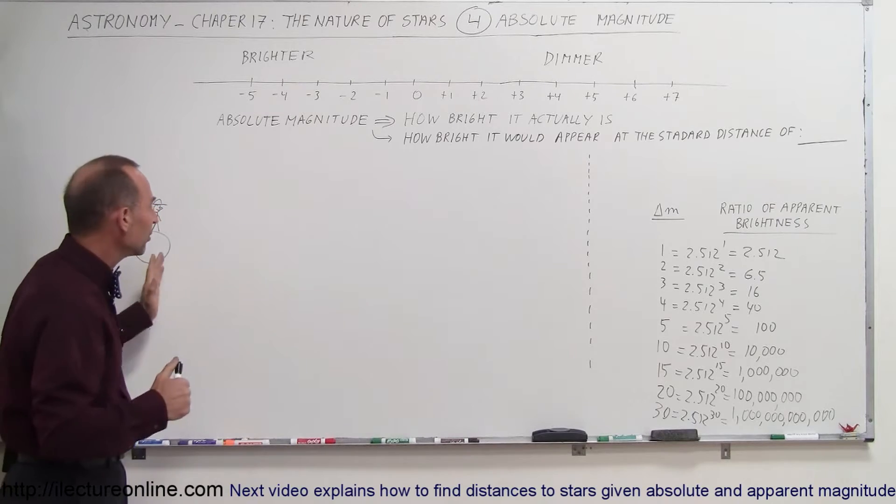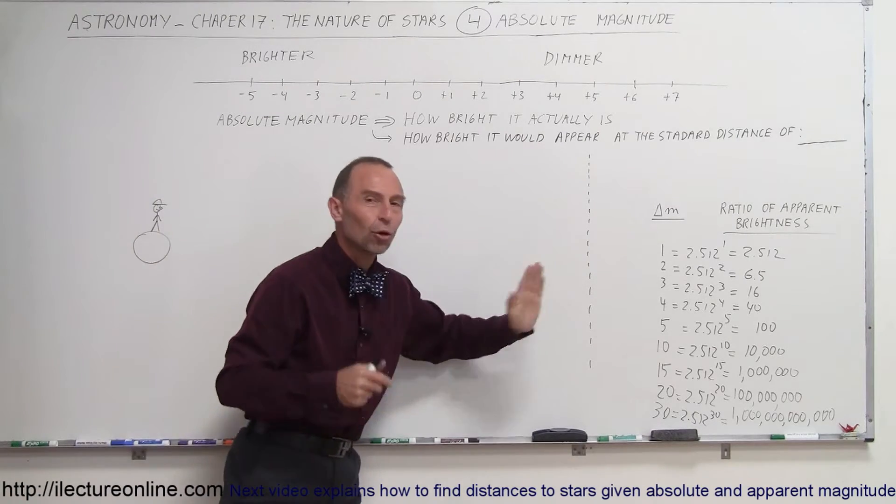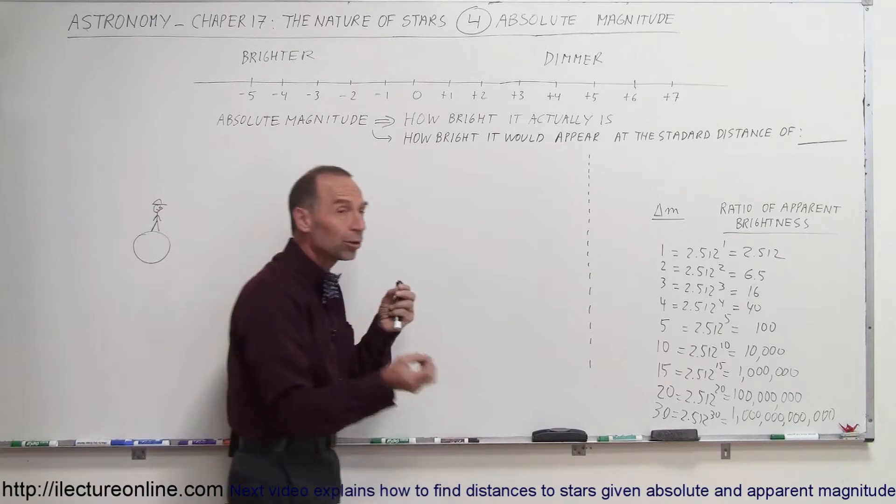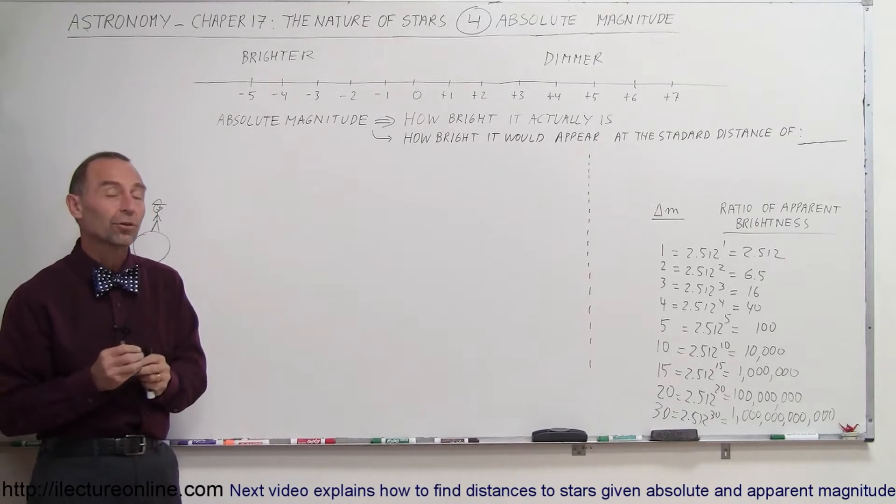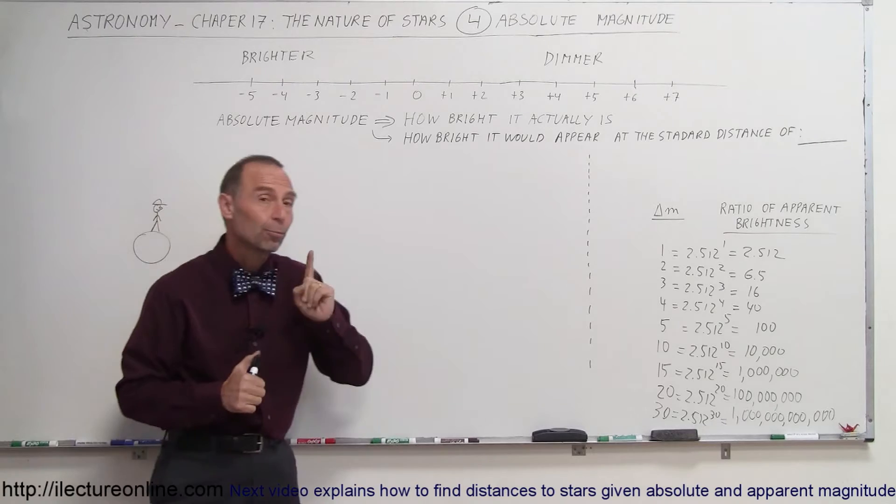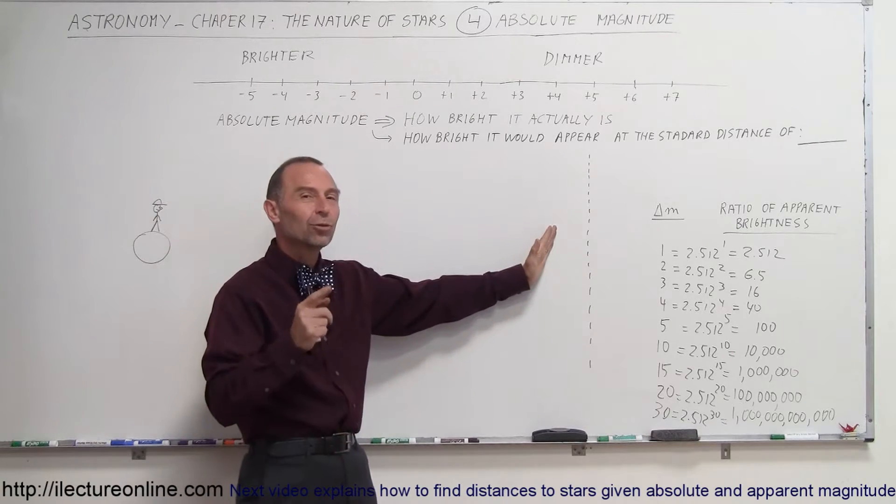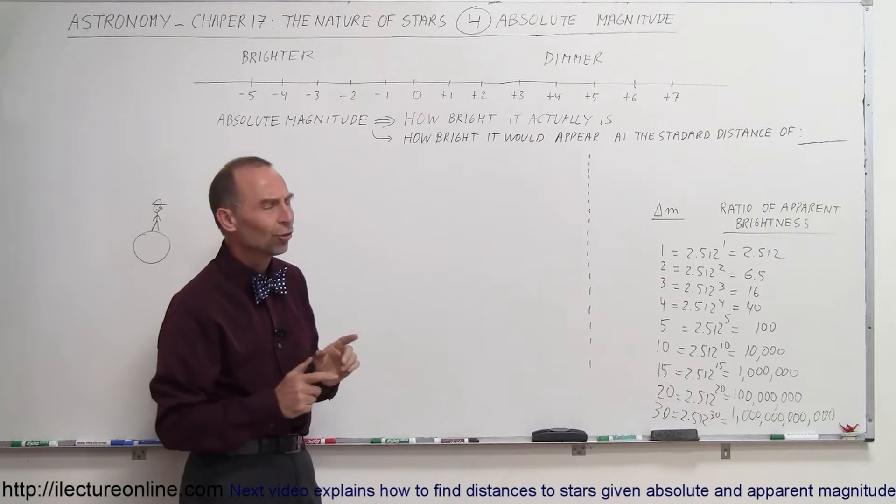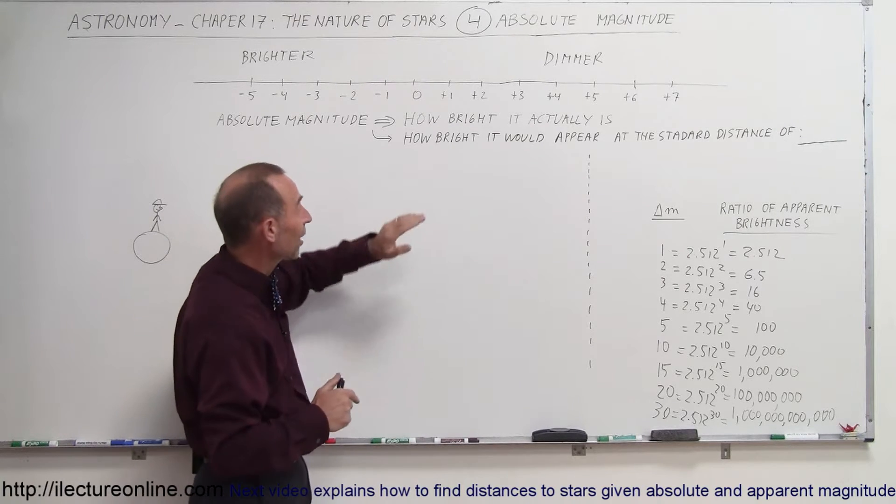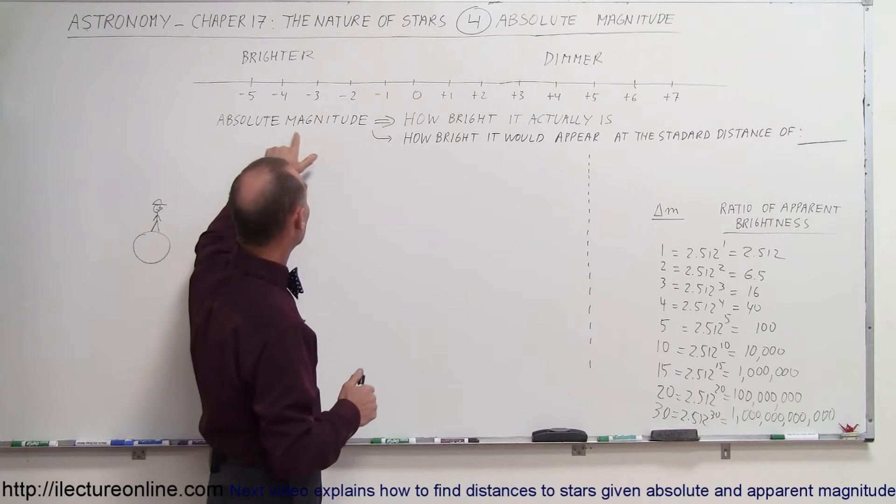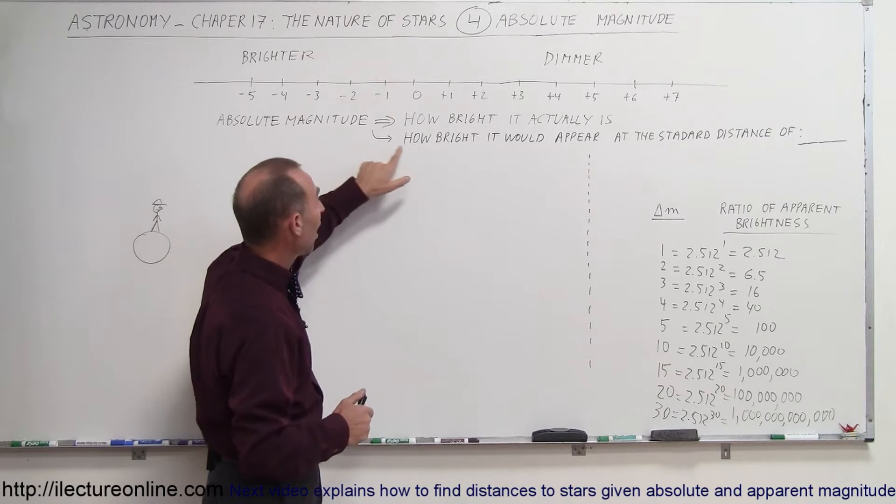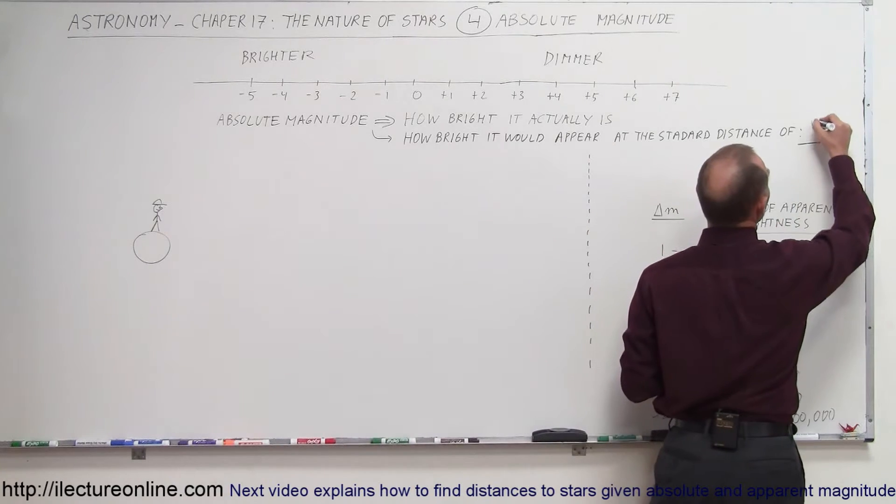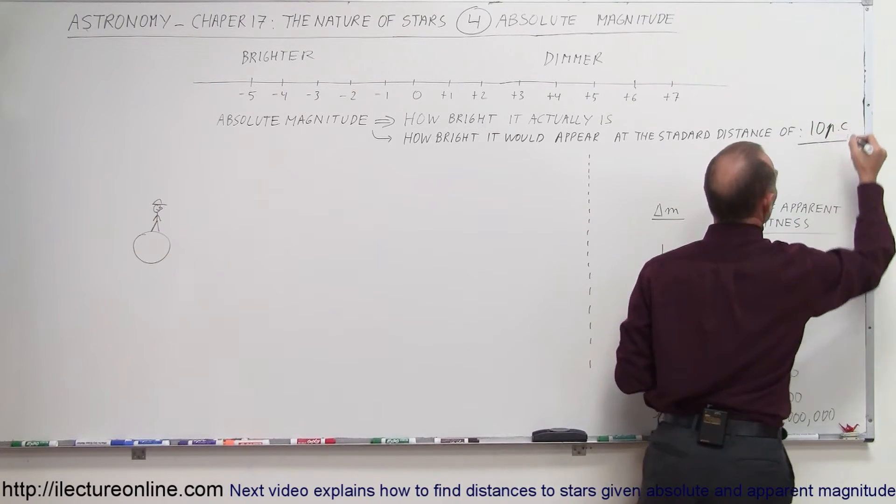Well, what we can do is we can put the object at a standard distance away from us. If we put all the objects at that distance, then we would compare the brightness to one another. Matter of fact, the absolute brightness of an object is equal to the apparent brightness of the object if it's placed at that standard distance. The question is, what is that standard distance? And it turns out, how bright an object would be, so absolute magnitude is how bright it would appear at the standard distance of, and we picked that to be 10 parsecs.